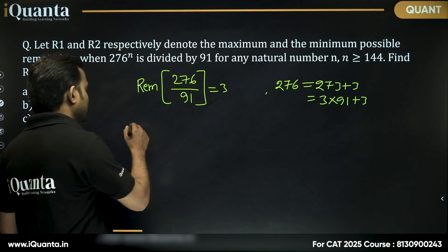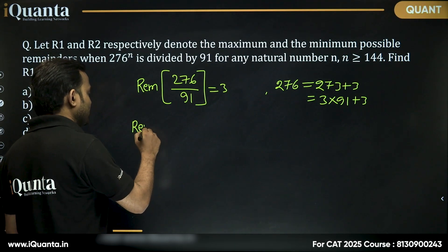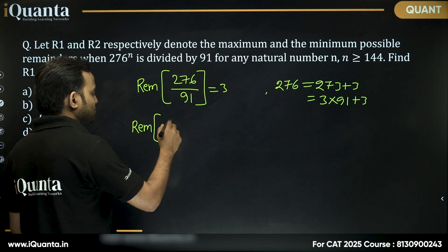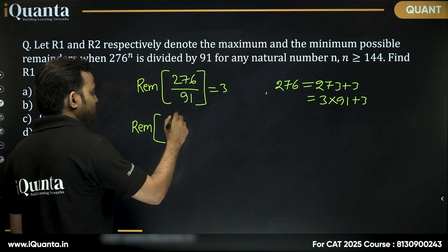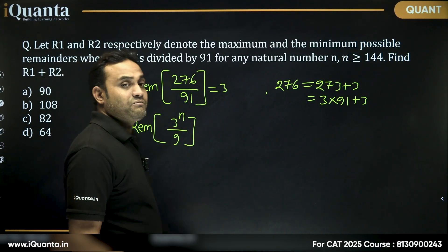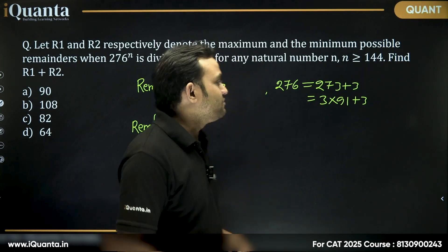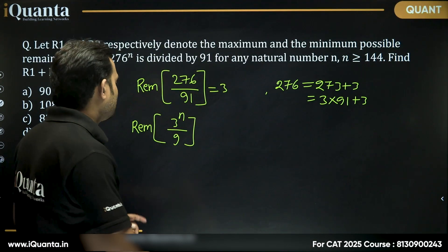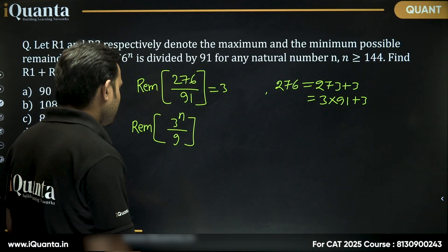So can I say that when we are trying to find the remainder when 3 to the power n is divided by 91, now we can find the maximum and minimum remainder and then we can add the values. So what will be the remainder?